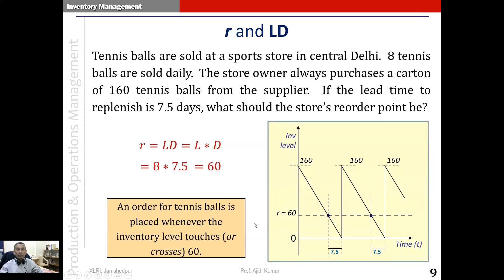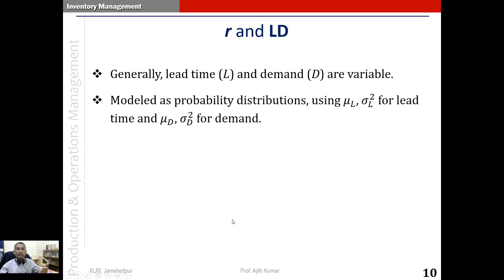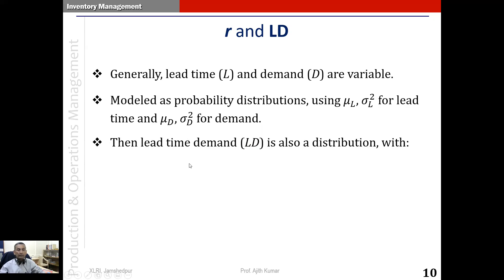Here we assumed both lead time and demand are constant. More generally, lead time and demand are variable. In such a case, we model them as probability distributions, where mu_L represents the mean of lead time and sigma squared_L its variance. Similarly, mu_D and sigma squared_D represent the mean and variance of demand. In that case, the lead time demand would also be a distribution. We compute the mean lead time demand as simply mean of lead time times mean of demand: mu_LD equals mu_L times mu_D.